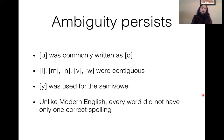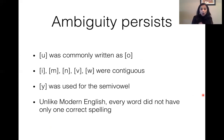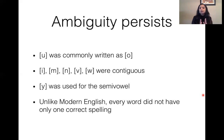This ambiguity persisted from Old English into Middle English. The sound 'u' was commonly written as 'o', and letters like e, m, n, b, w were always contiguous in spelling, and 'y' was used as a semi-vowel. Middle English was still in a flux period between Old English and Modern English. It was only when you reach the Modern English era that you start to see a lot of this ambiguity resolve.